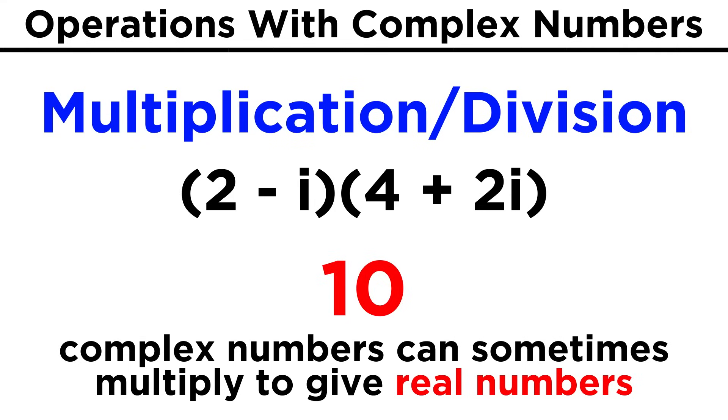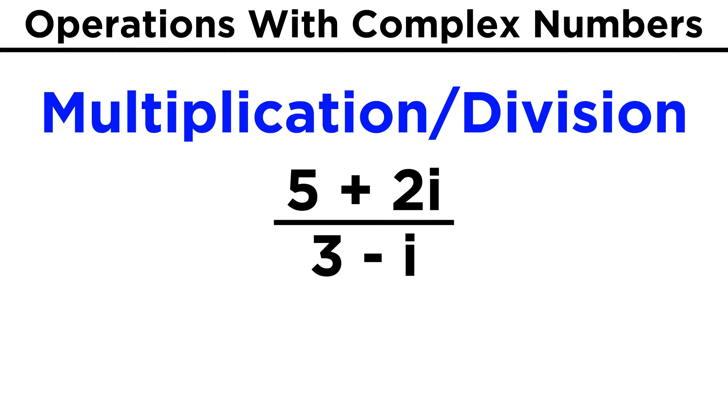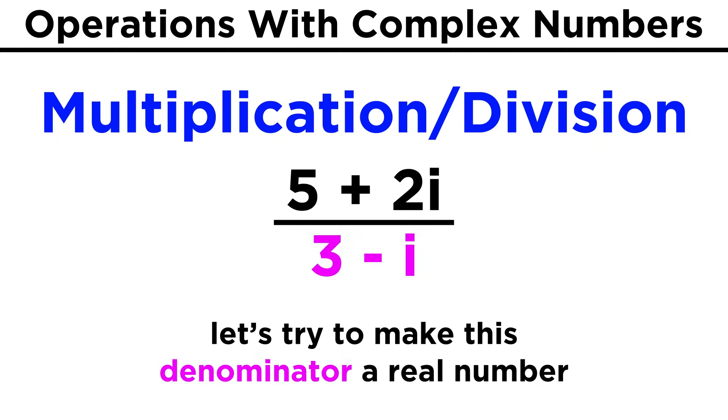This fact will come in handy if we want to divide complex numbers. Take something like five plus two i over three minus i. Obviously we can't do much with this as it is, but if we had a real number in the denominator, we could do something. As we just learned, it is possible to multiply complex numbers to get a real number, so we can multiply the top and bottom of this quotient by the same complex number to do exactly that.